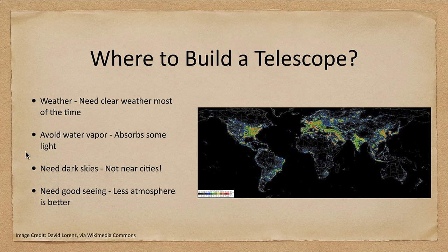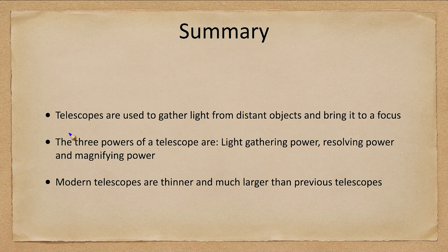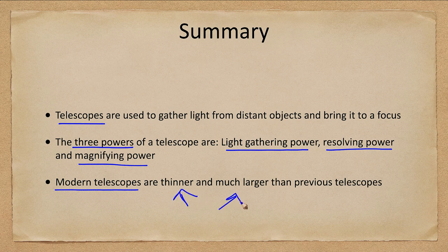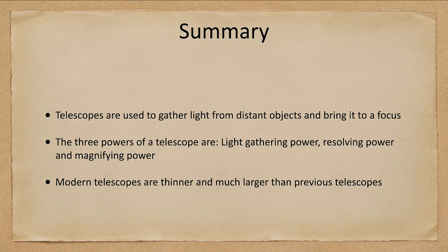Let's go ahead and finish up with our summary. What we've looked at today is what a telescope is — a device used to gather light from distant objects and bring that light to a focus. We looked at the three powers of a telescope: light gathering power, resolving power, and magnifying power. And we looked at modern telescopes and how they are much thinner and larger than the previous telescopes of even just a few decades ago. That concludes this lecture on optical telescopes. We'll be back again next time for another topic in astronomy.